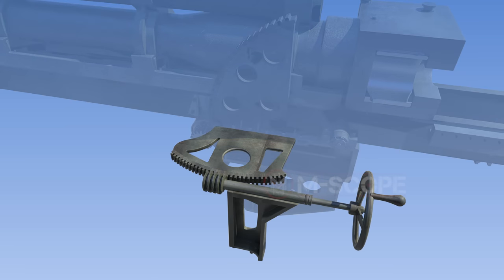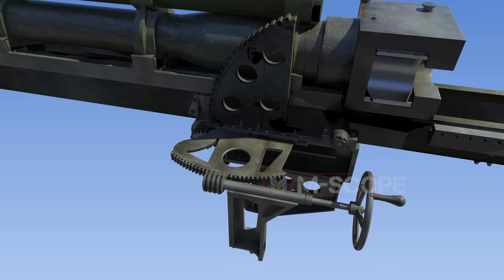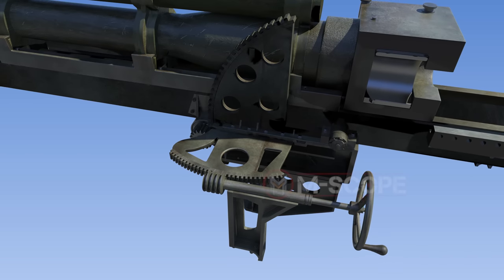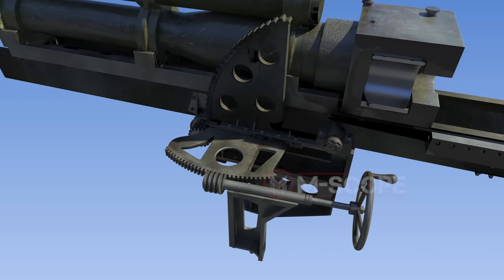The traversing mechanism rotates the cannon. By turning the handwheel, the interlocking screw turns and allows the cannon to rotate left and right.